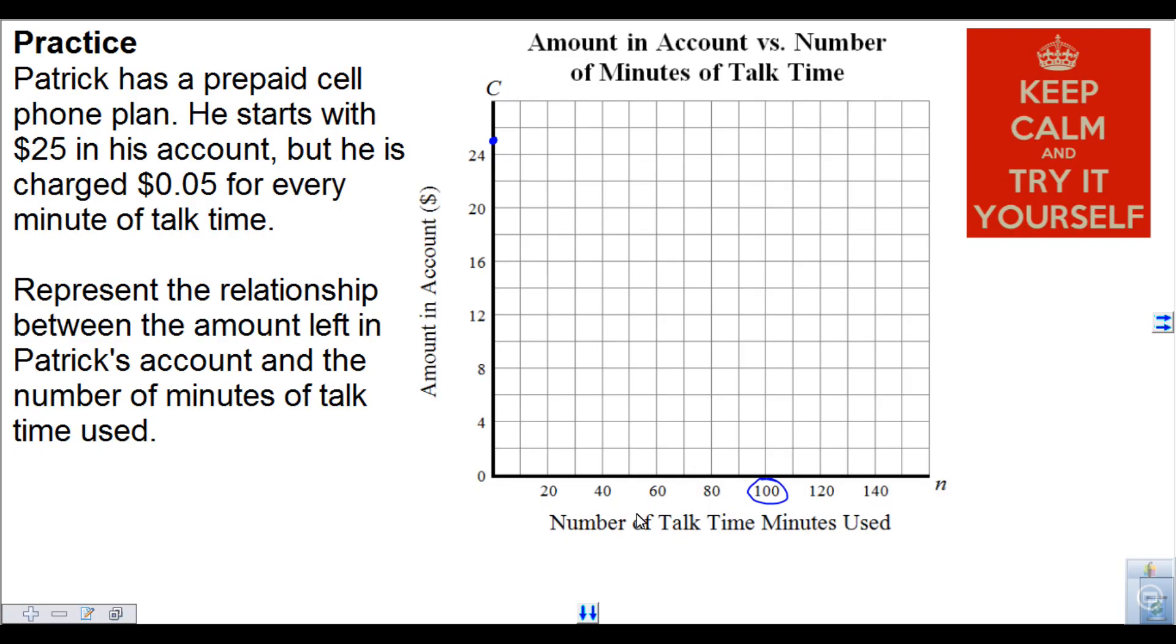I'm going to pick 100 because that's an easy number to calculate. So the equation again would be in the form y equals mx plus b. Here, the amount is—let's use A. So A is equal to 0.05, but it's charging into his account, that's going to make it lower, so it's going to be negative 0.05 times 100 plus the initial value, which is 25.